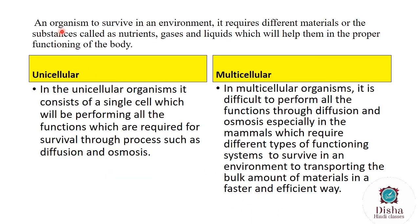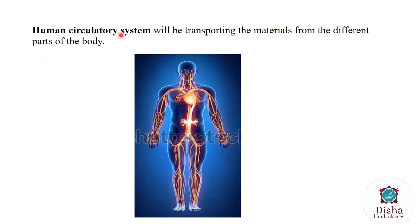For an organism to survive in an environment, it requires different materials or substances called nutrients, gases, and liquids, which help in proper functioning of the body. Unicellular organisms depend upon one cell for all functions, and this cell performs all functions through diffusion and osmosis. Multicellular organisms depend upon different types of systems, as diffusion and osmosis cannot perform all functions and cannot transport bulk amounts of materials faster and in an efficient way.